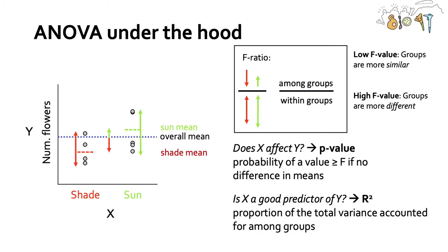How does ANOVA work under the hood? The key value we use to compare groups is the F ratio. For example, comparing number of flowers in shade versus sun conditions: in the shade treatment we have plants with various numbers of flowers and a mean shown by the dotted red line, and in sun we also have plants with various numbers of flowers with the green line as the mean. We calculate an F ratio by looking at differences among groups versus within groups. Low F values mean groups are more similar, while high F values mean groups are more different.